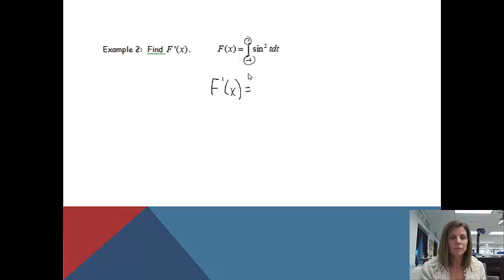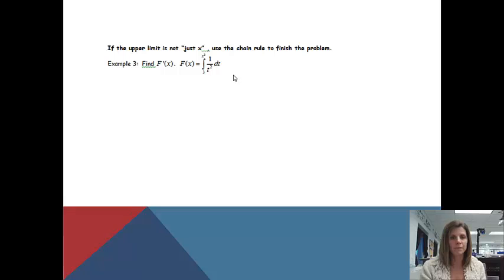So when I take the derivative, the derivative and the integral will cancel each other out. So I'm just going to be left with sine squared. The t just gets replaced with the variable that was on the top, which is an x. And that is all you have to do.